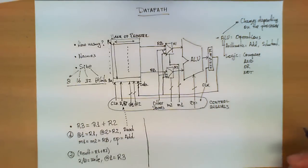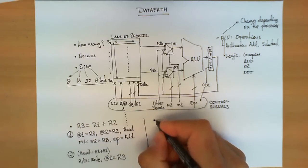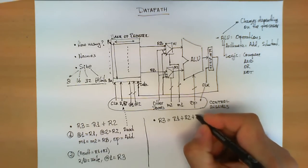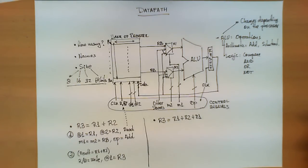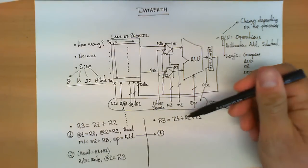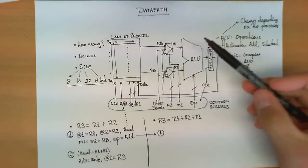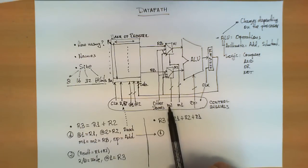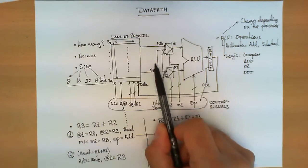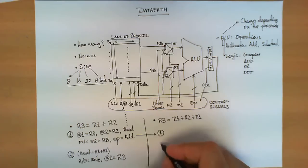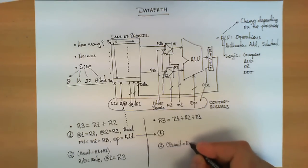Now let's make a more sophisticated operation. Suppose the operation we want to execute is R3 equals R1 plus R2 plus R1 again. The first step is exactly the same as the previous one: calculate R1 plus R2. Therefore, address 1 is set to R1, address 2 to R2, M2 and M1 are set so that the value from the register bank is selected, and the operation is set to add. At the end of that clock cycle, we are guaranteed that the result register contains R1 plus R2.